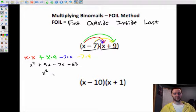9x and negative 7x combine, because they are like terms, so they combine to make 2x. And that is your most simplified polynomial. Okay.